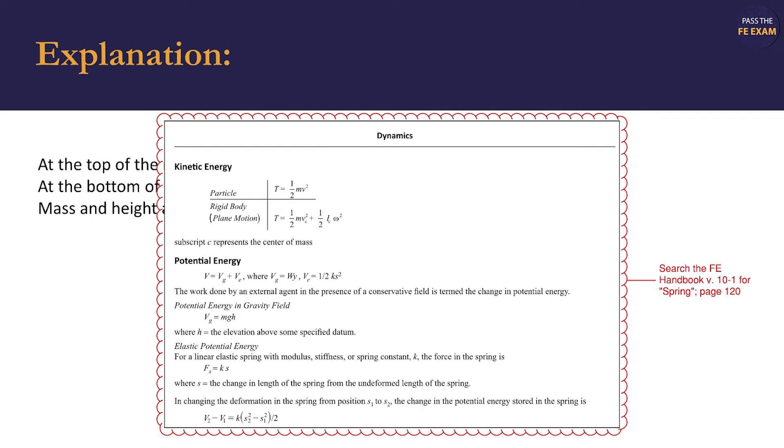We can search the FE handbook for a number of keywords. When we search for spring, we find the following equations on page 120 within the dynamics section. As we identified prior, all energy is gravity field potential energy when the disc is at the top of the ramp. We see that this is given by equation V equals mgh. After the disc slides down the ramp at the spring's maximum compression, all energy is elastic potential energy given by the equation V equals one-half ks squared.